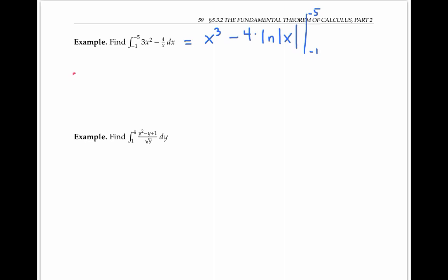In other words, the notation F(x) evaluated from a to b means F(b) minus F(a), which is what we need to compute for our antiderivative here.